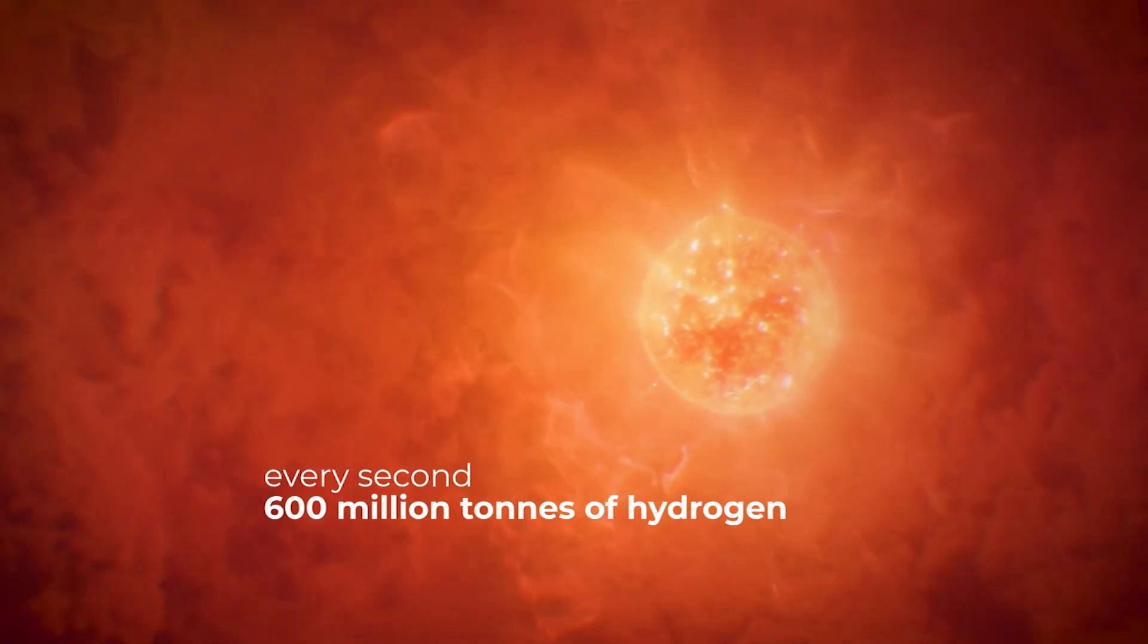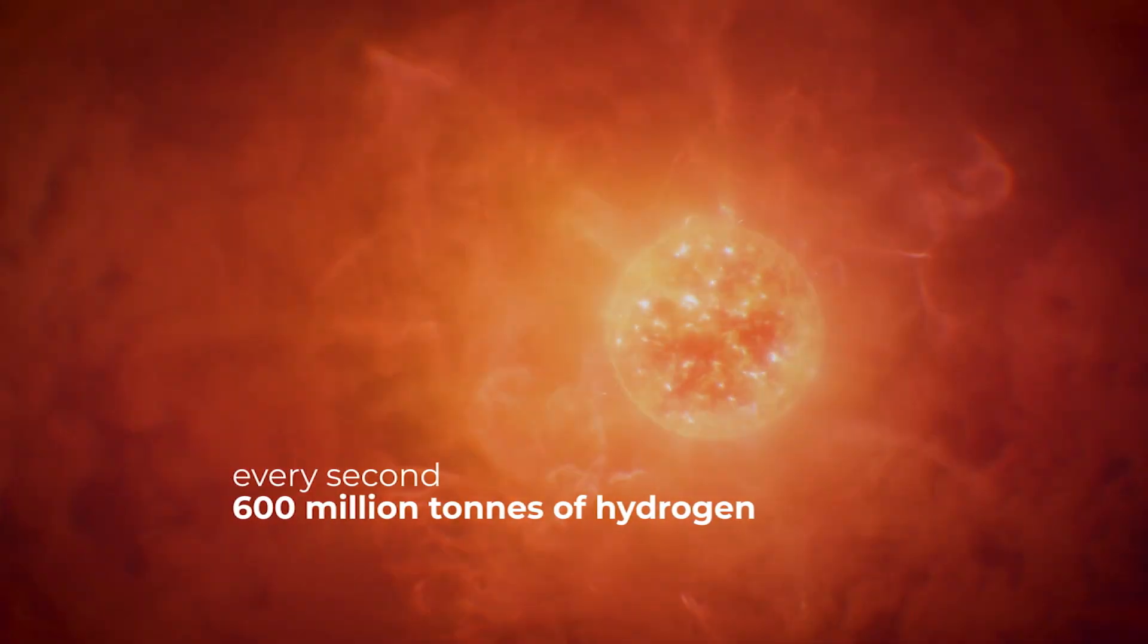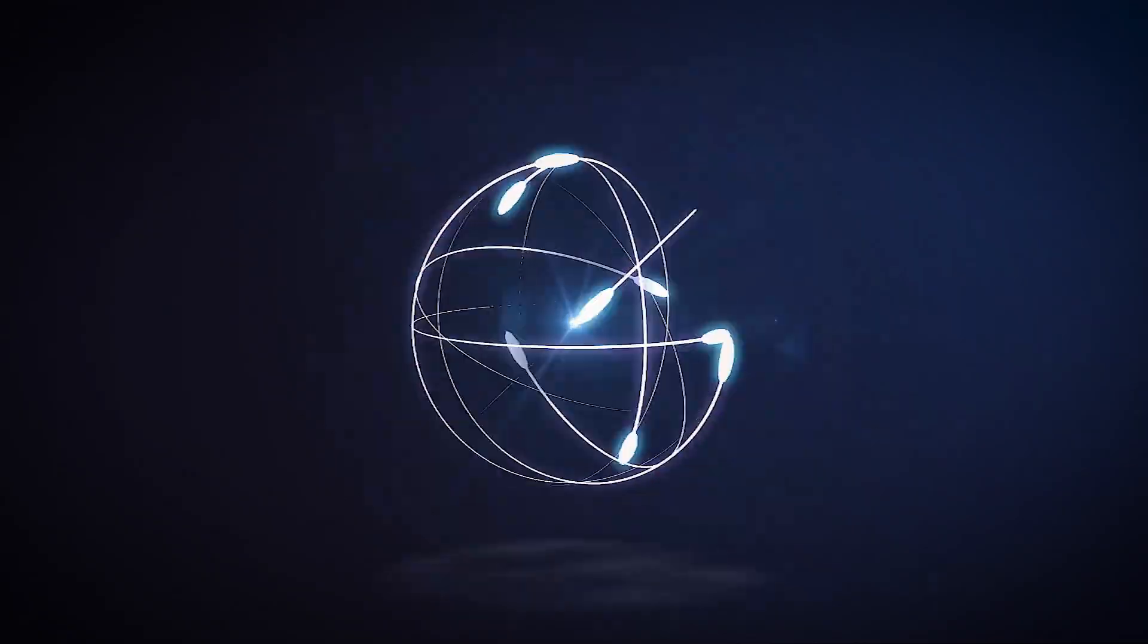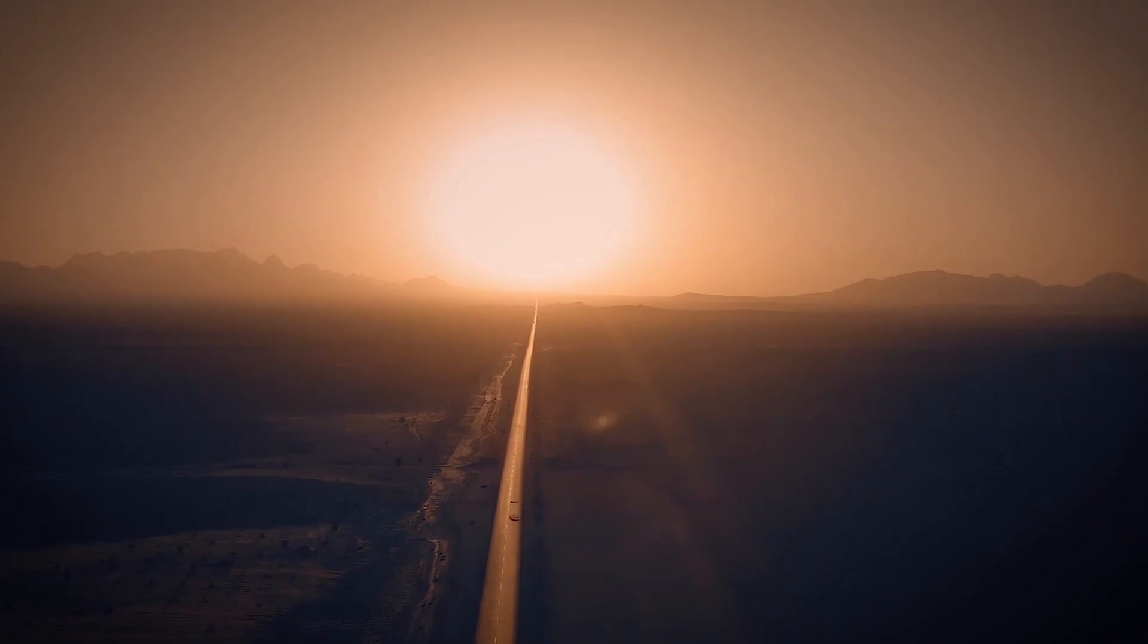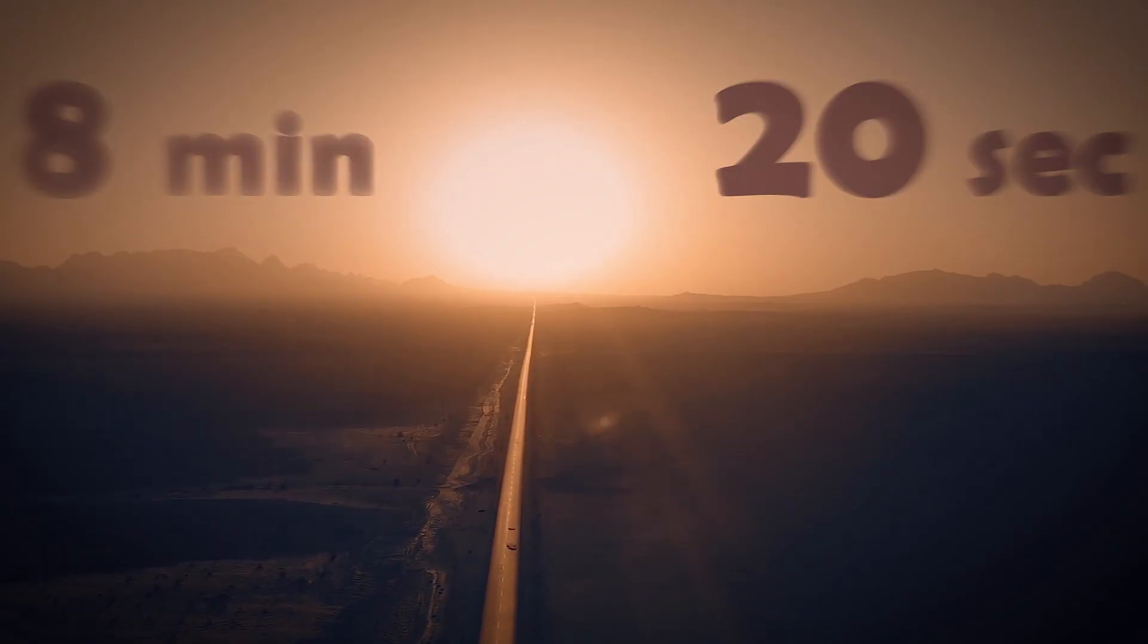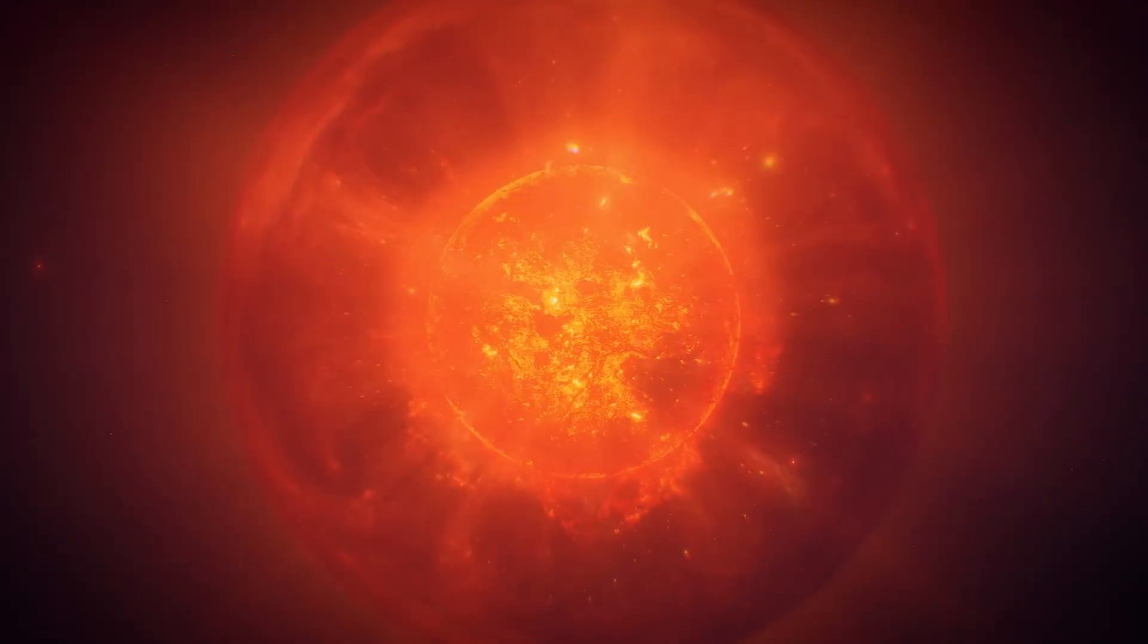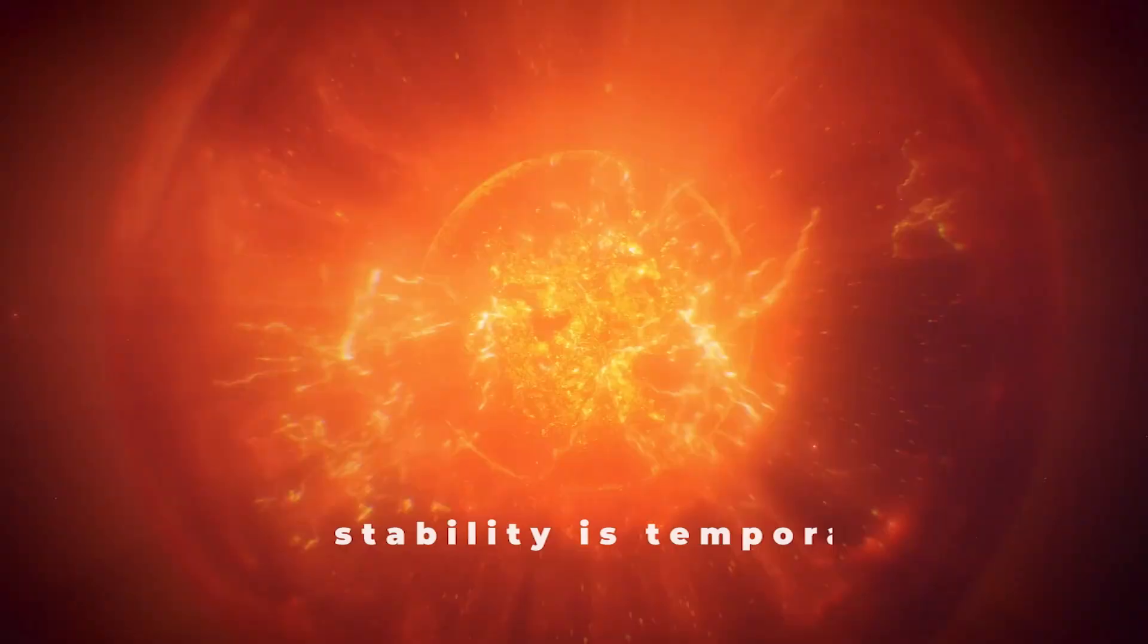About 600 million tons of hydrogen disappears every second. Part of the mass is converted into energy, light and heat. It is these that reach the Earth after 8 minutes and 20 seconds, providing all living things with energy. It's a stable process, but stability is temporary.